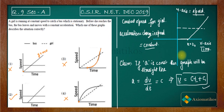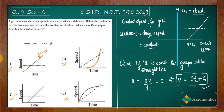So the two key facts are: constant speed means a horizontal straight line on the speed-time graph, and constant acceleration means a sloped straight line. Using just these two facts, we can eliminate every incorrect option. This question should take no more than one minute in your exam. For any doubts, ask in the comments or join our WhatsApp and Telegram groups via the links in the description.